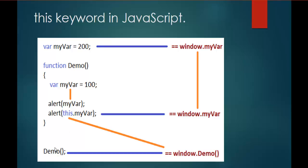In summary: I have function 'demo', and when I call it, the first alert 'myvar' refers to the local variable inside the function, so we get 100. Then 'alert(this.myvar)' — since this function is called from the global scope — 'this' points to the window object, so it goes in search of 'myvar' declared outside the function and prints 200. This is the global scope relation with the 'this' keyword.